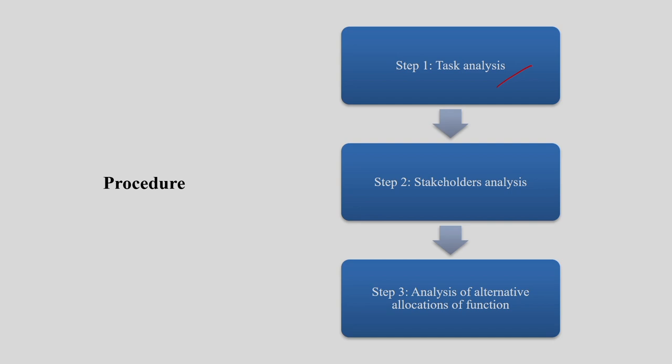Once task analysis data has been gathered from HTA, the next step is stakeholders analysis. You try to understand the stakeholders' views. This stakeholder analysis is slightly different from HTA — you take a view from them, but you need not incorporate all their views exactly as they desire.